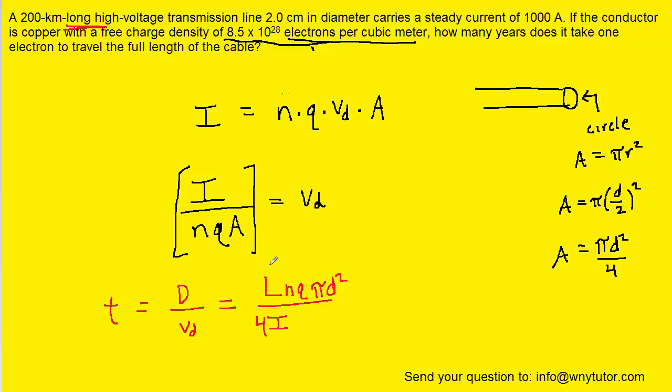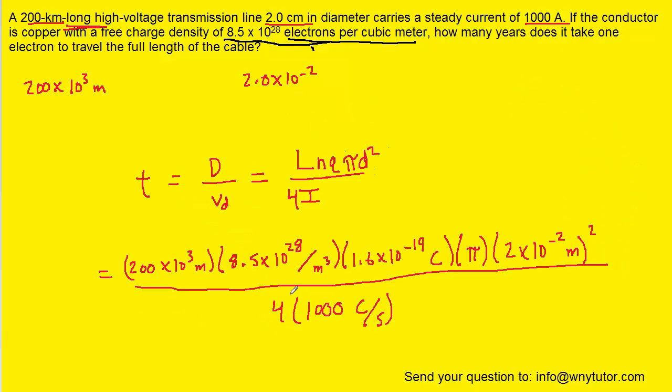We're now ready to plug in the values. The length was given in kilometers, so we multiply by 10 to the positive 3 to convert to meters. N was stated in the question. Q is the charge of the electron we noted earlier. We've got pi. D is the diameter given in centimeters, so convert to meters by multiplying by 10 to the minus 2. The current i was given in the standard unit. Here we've plugged in all the known values.